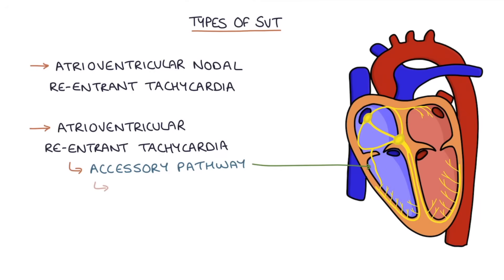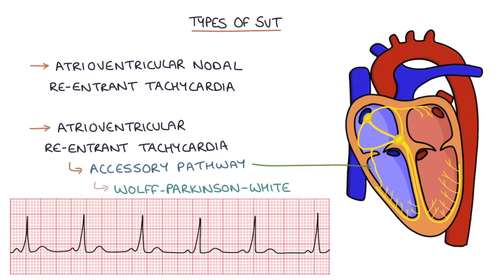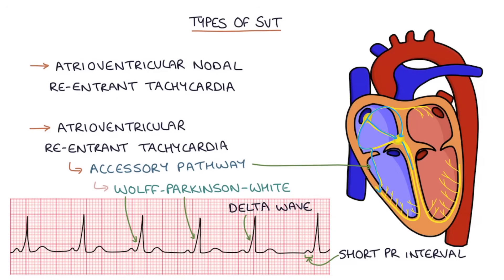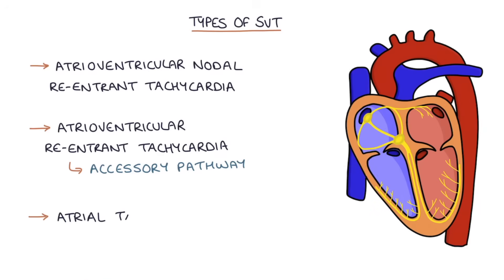Having an extra electrical pathway in the heart is called Wolff-Parkinson-White syndrome. This pathway might not cause any symptoms, or it might cause episodes of SVT. It may be seen on a routine ECG as a slurred upstroke in the QRS complex called a delta wave, and there will also be a short PR interval — caused by electricity prematurely entering the ventricles through the accessory pathway. Finally, atrial tachycardia is where the electrical signal originates in the atria somewhere other than the sinoatrial node, caused not by re-entry but by abnormally generated electrical activity in the atria.